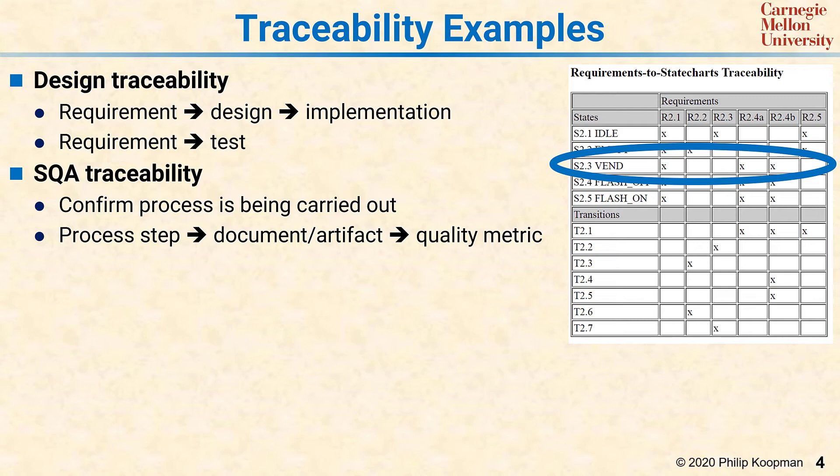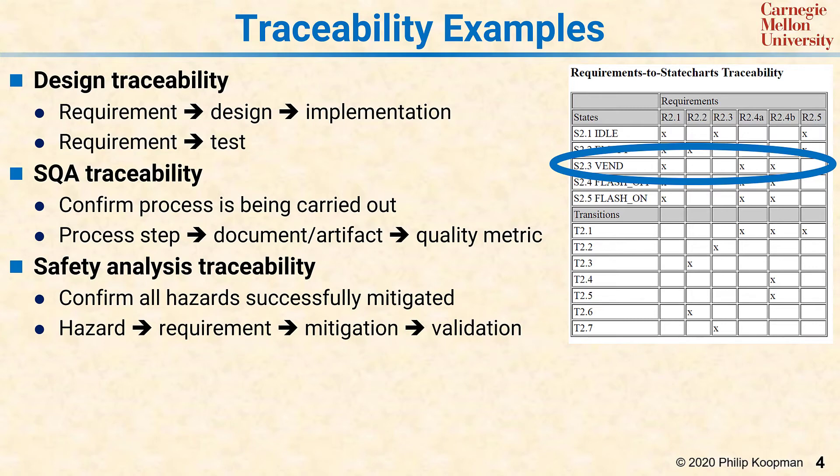Another type of traceability example is safety analysis. Safety analysis is covered much more extensively in other lectures, but one simple example is: you have a hazard, and that hazard results in a safety requirement, and that safety requirement results in a necessary mitigation, and then you want to validate that the hazard is actually mitigated. If you break a step in that chain, you're not sure the hazard has been mitigated. Traceability through that chain lets you know you've successfully validated that all identified hazards have been mitigated.